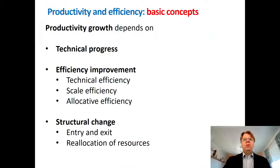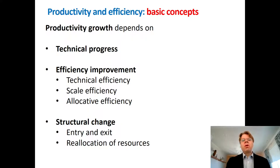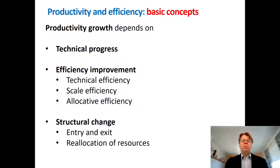Firstly, let us connect this to the previous introduction of the conceptual setting. Remember that we decompose productivity growth into three sources: technical progress, efficiency improvement, and structural change. So how does the frontier production function relate to any of these?